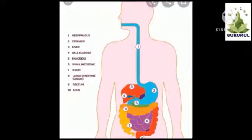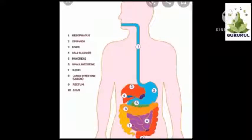Fibre has a special function. This type of fibrous substance helps the food to move forward in the alimentary canal at the right speed. These fibrous substances help to form stool from undigested food in our body.